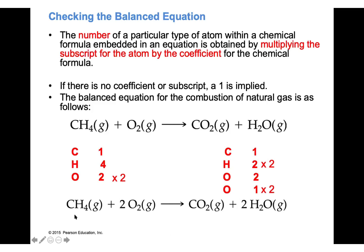Rechecking the final balanced combustion equation: 1 carbon on the left, 1 carbon on the right; 4 hydrogen on the left, 4 hydrogen on the right; 4 oxygen on the left, 4 oxygen on the right — it's balanced.